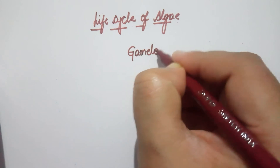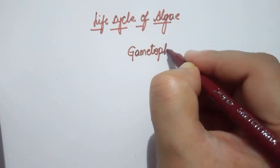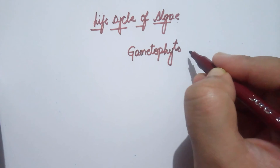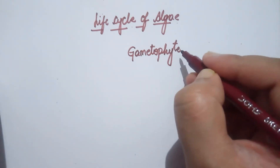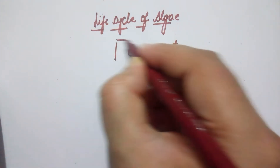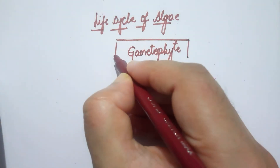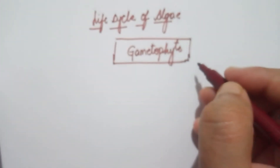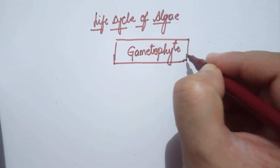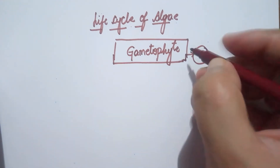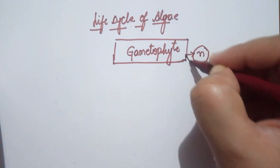...gametophyte. So gametophyte is the dominant stage. Remember, gametophyte is a gamete-bearing structure, and sporophyte is going to produce spores. This gametophyte is haploid — it is a haploid structure.